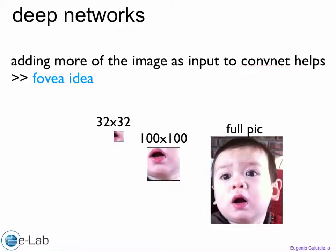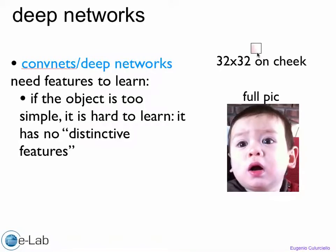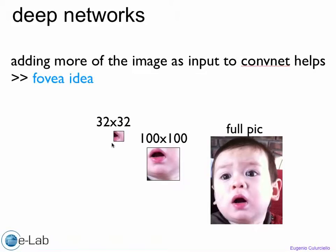One idea that can help a deep network: if your object is fairly large, what you can do is increase the input. Another thing you can do is to feed your network not just a little patch but also a larger patch and even larger patch together—multiple resolutions at the same time.